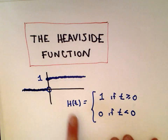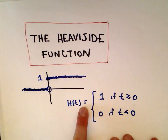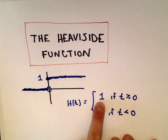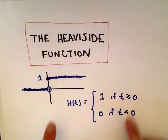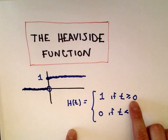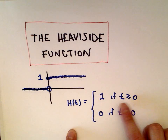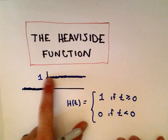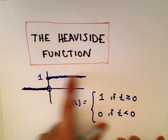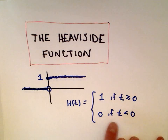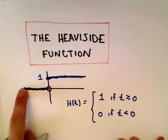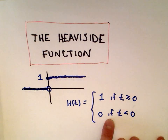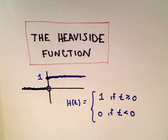The definition: we say h of t equals 1 if t is greater than or equal to 0. So at time 0 and afterwards the function is turned on, it equals 1. And prior to that it's going to equal 0 if t is less than 0.